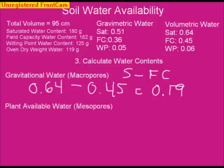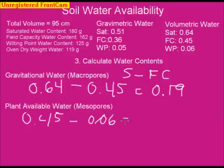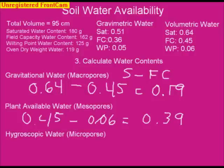Next, calculate plant available water, the most critically important for plants, associated with mesopores: 0.45 minus 0.06 equals 0.39. Finally, calculate hygroscopic water, associated with micropores, which is wilting point minus oven dry (0). Since oven dry is zero, the hygroscopic water is 0.06.